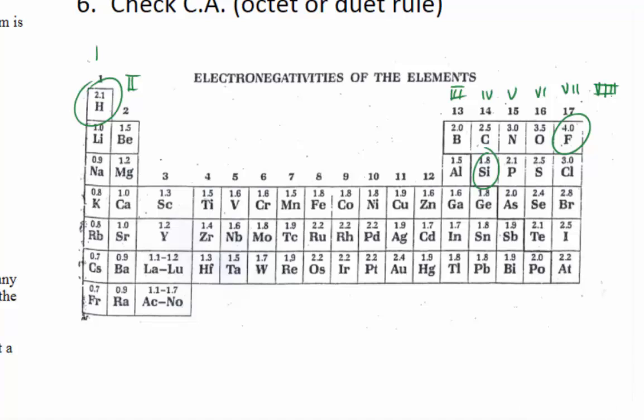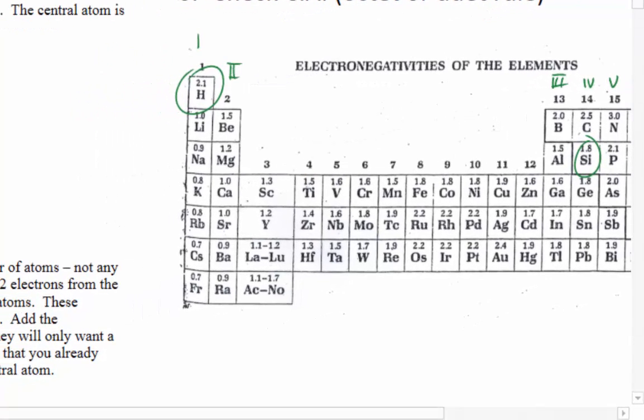Boron has three valence electrons, carbon has four, nitrogen has five, etc. If you look at those old group numbers, you can very quickly get a count. We need to count up all the outer highest S and P electrons in each atom. And if there's a charge, we can't just ignore it — we've got to add electrons if there's a negative charge and remove electrons if there's a positive charge. That's kind of the first step.